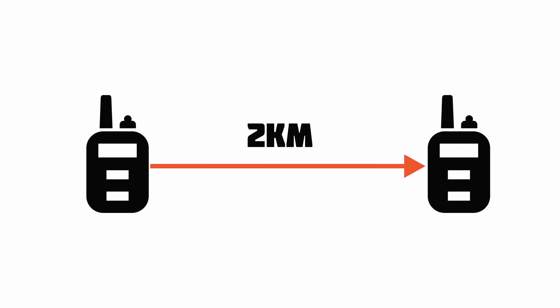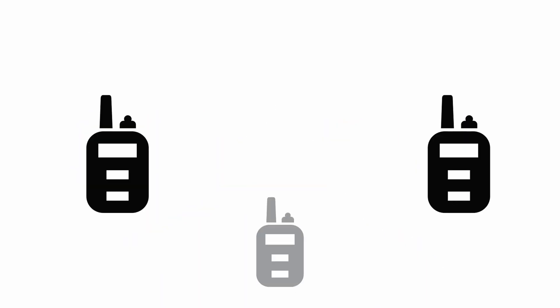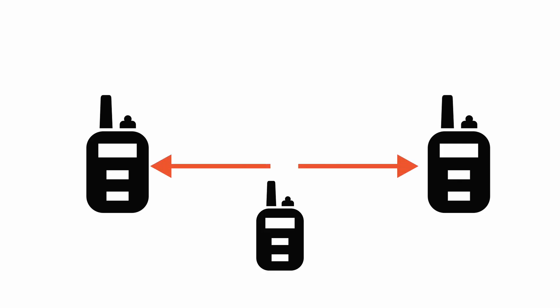Suppose you have two nodes with a range of two kilometers. In the presence of an extra node, you will get four kilometers of range. At least two nodes are needed for communication. So that's it — I think you got the idea.